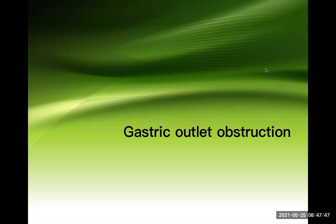Gastric outlet obstruction, also known as pyloric stenosis — these are the three complications. Apart from them, some electrolyte imbalance and other things can happen. Sometimes peptic ulcer disease can also complicate into gastric cancer, especially if it is a gastric ulcer case. A duodenal ulcer patient never complicates into malignancy.